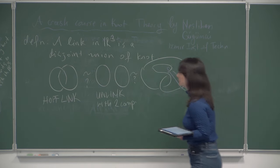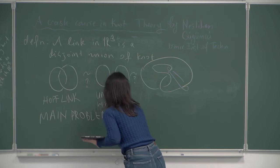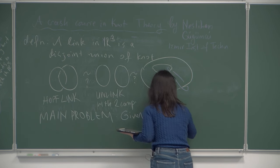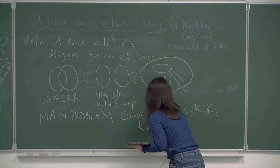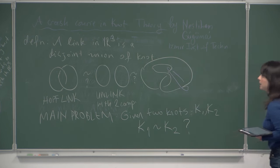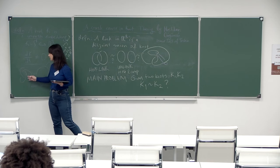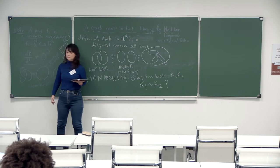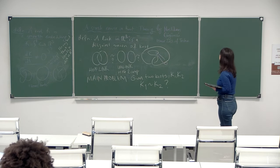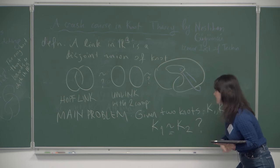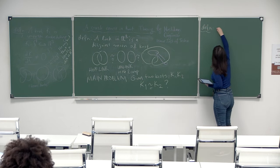Can we take the components of the Hopf link apart to get an unlink? Can we pull the purple Whitehead link component out to make it trivial? These are intuitive questions: given knots or links with some geometric configuration, up to a topological relation, are they the same or not? That's the main problem of knot theory: given two knots k₁ and k₂, are they related to each other?